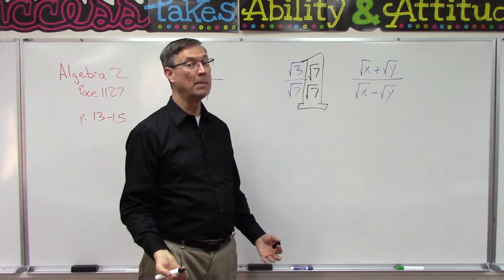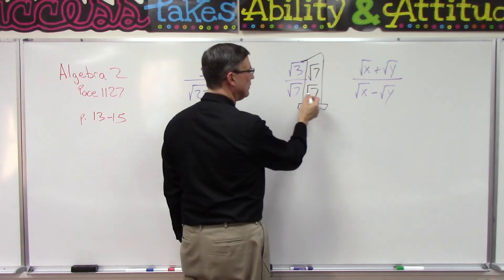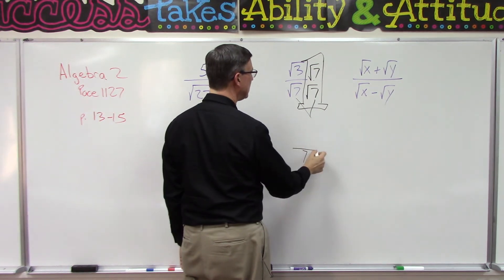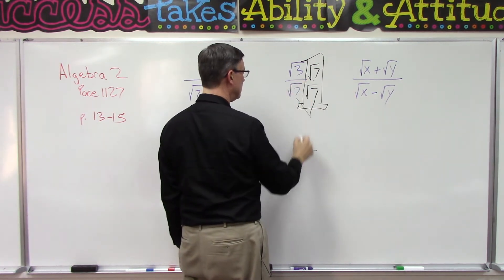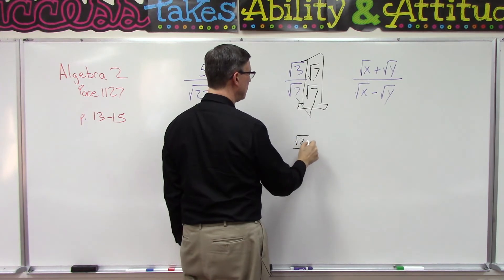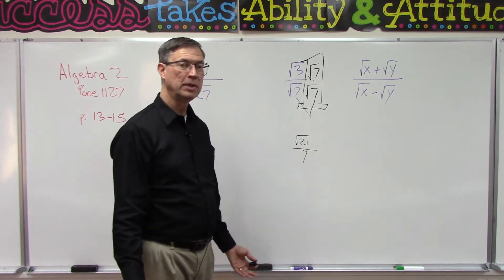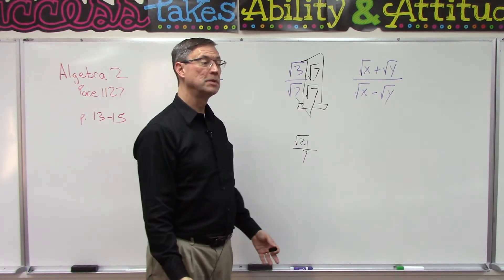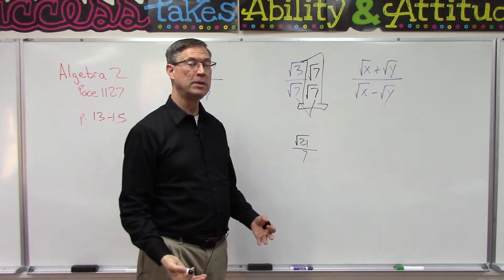So here, the square root of seven times the square root of seven—the seven pops out. Now I can simplify the top and I get the square root of 21, and I really can't do anything further with that. So this is rationalized, and sometimes the directions will say simplify the fraction. This is actually simpler.